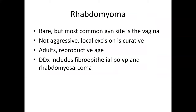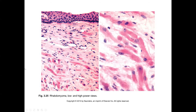Rhabdomyoma is a rare tumor, but the vagina is the most common gynecologic site. Differential diagnosis includes fibroepithelial polyp and rhabdomyosarcoma. The characteristic findings are strap-type cells with bland benign nuclei and possible cross-striations, which constitute enough criteria for the diagnosis. This will likely generate a phone call asking whether rhabdomyosarcoma was excluded, but one can reassure that it is benign in this setting.